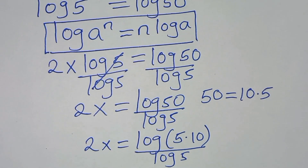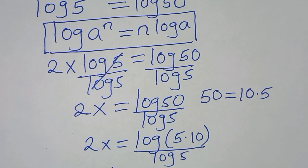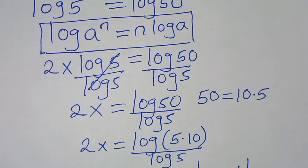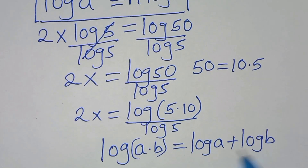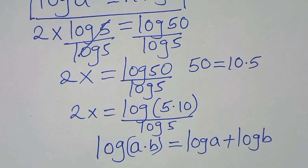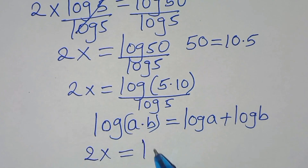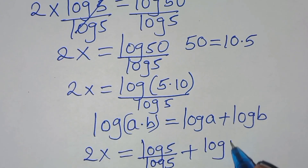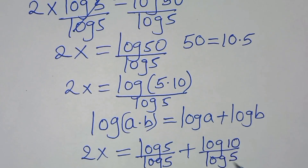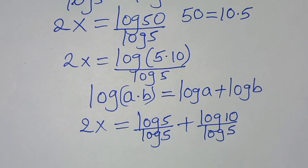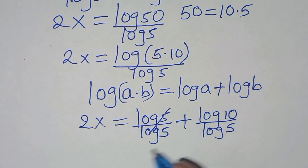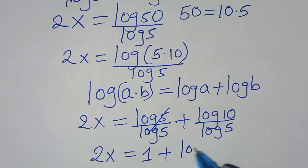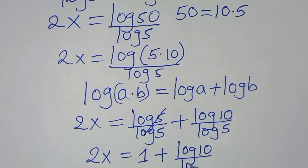The next step is that log(5 times 10) is in the form of log(a times b), which we can express as log a plus log b. So applying this logarithm product property, here we have 2x equal to log 5 divided by log 5, plus log 10 divided by log 5. Simplifying log 5 over log 5 gives 1, so we have 2x equals 1 plus log 10 divided by log 5.